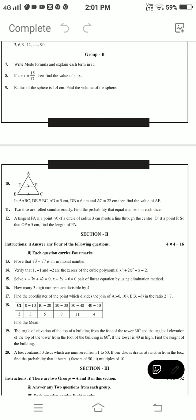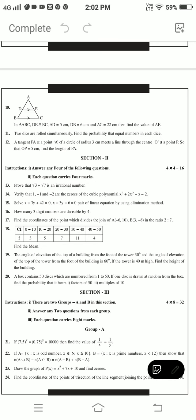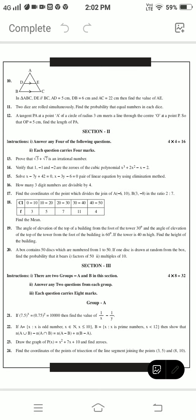Problem 18: Find the mean of the data. Problem 19: The angle of elevation of the top of building from foot of the tower is 30 degrees and angle of elevation of the top of tower from the foot of building is 60 degrees. If the tower is 40 meters height, find the height of the building. A box contains 50 discs which are numbered from 1 to 50. If one disc is drawn at random from the box, find the probability of it being a perfect square of 50 or multiple of 10.